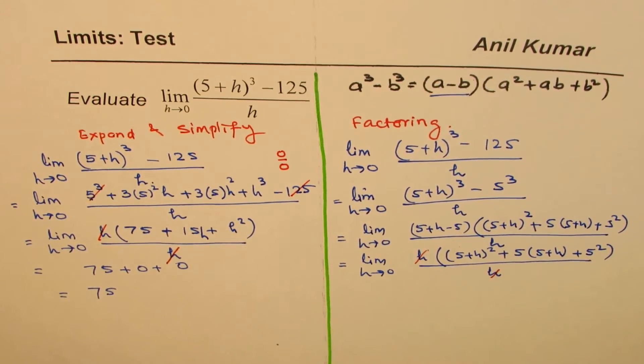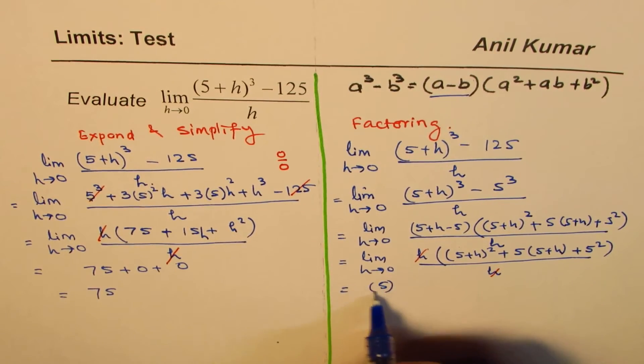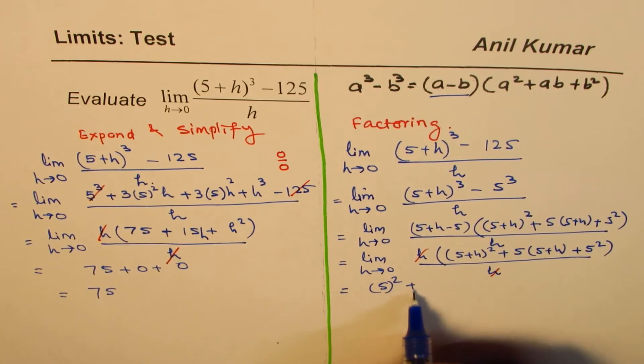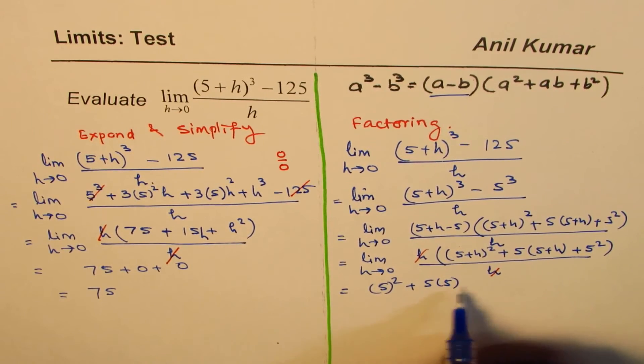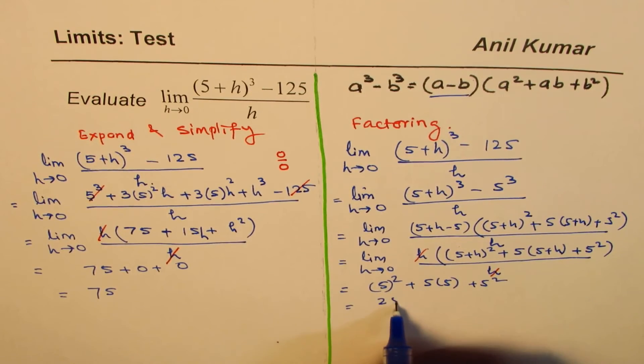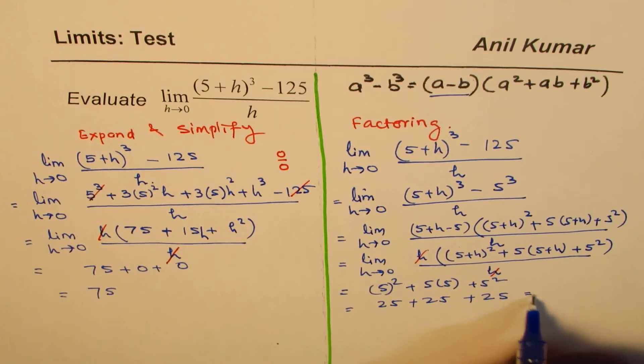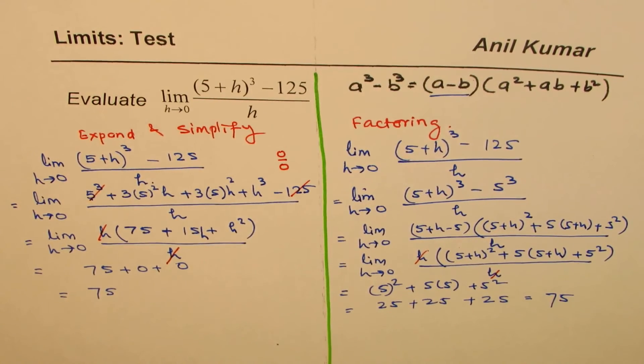Now, we can cancel these and then substitute h equals to 0. So, we get 5 square plus 5 times 5 plus 5 square, right? That is 25 plus 25 plus 25. And that is indeed 75. So,